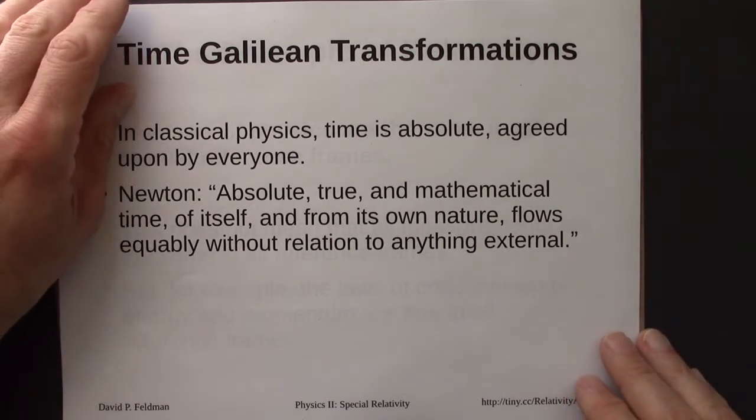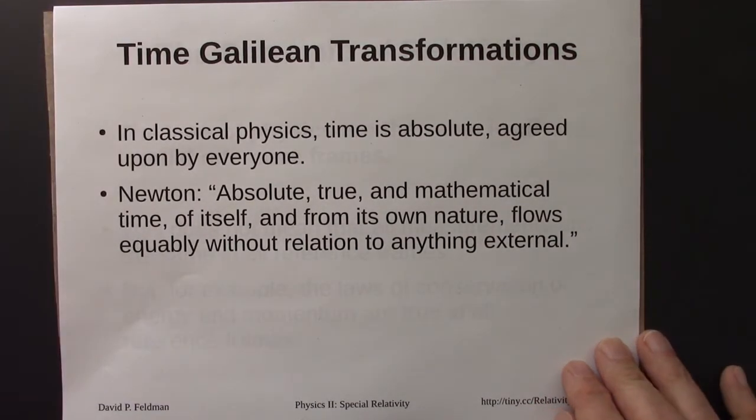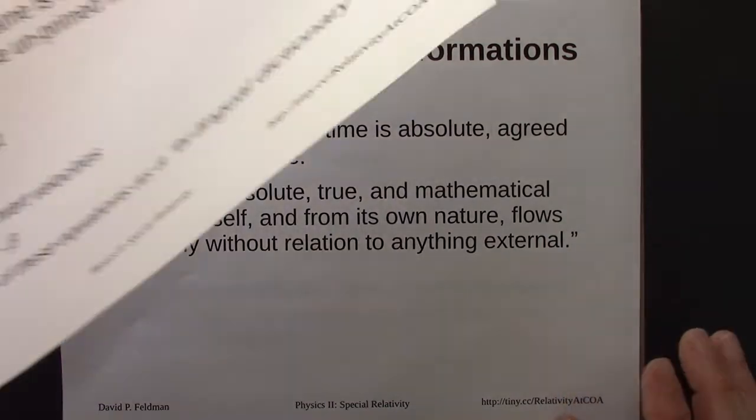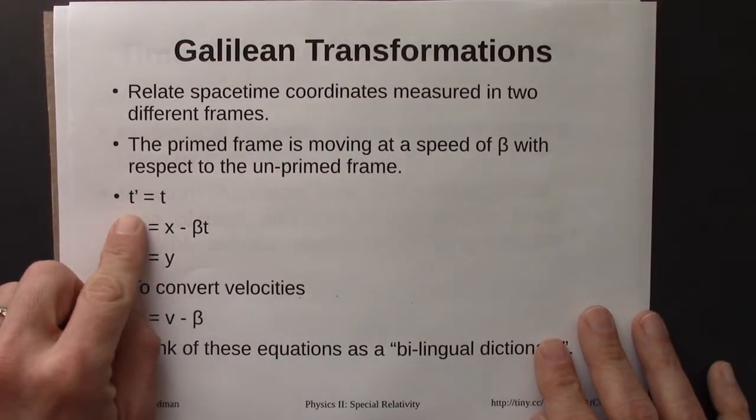So the Galilean transformations are classical. This is before Einstein. And in classical physics, time is absolute. It's agreed upon by everybody. No matter what frame you're in, time is time.